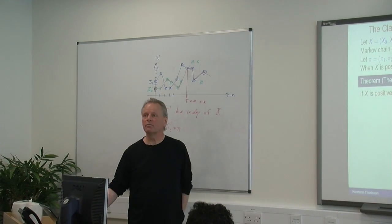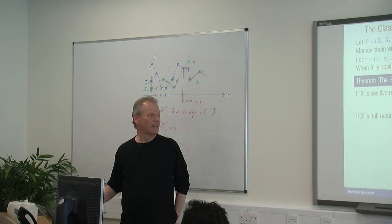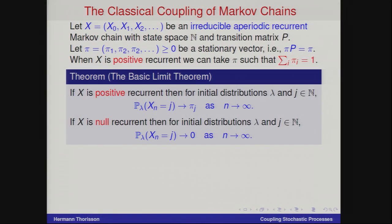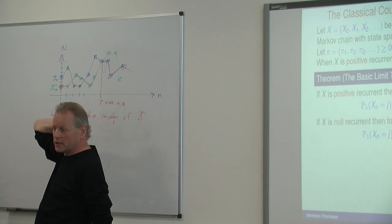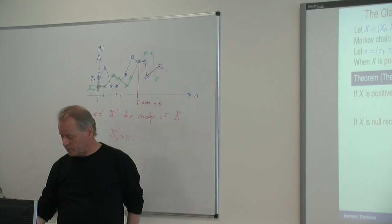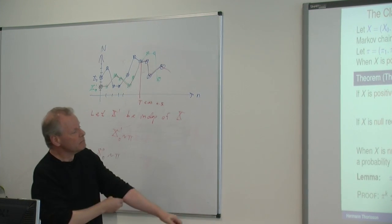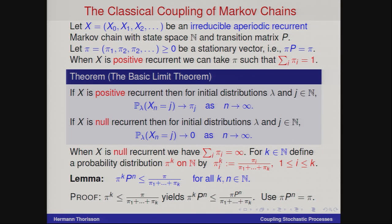I want to make some advertisement for the null recurrent case, because no one seems to have noticed that there is a proof there too, which is not too technical. In the null recurrent case, this goes to zero, so you can't do the same trick — you can't start a stationary chain. But in the null recurrent case, the sum of the pi's is infinite, and we shall now truncate it.